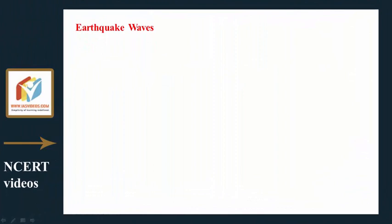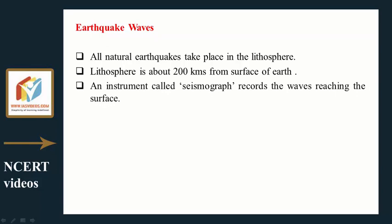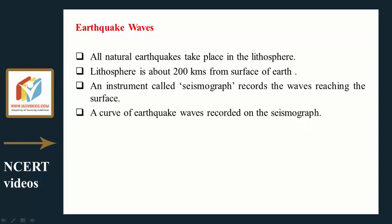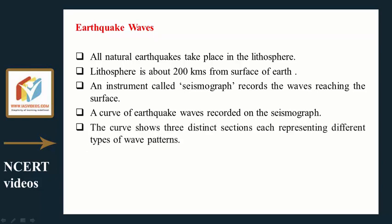All natural earthquakes take place in the lithosphere, which is about 200 kilometers from the surface of the earth. An instrument called a seismograph records the waves reaching the surface. The curve of earthquake waves recorded on the seismograph shows three distinct sections, each representing different types of wave patterns.